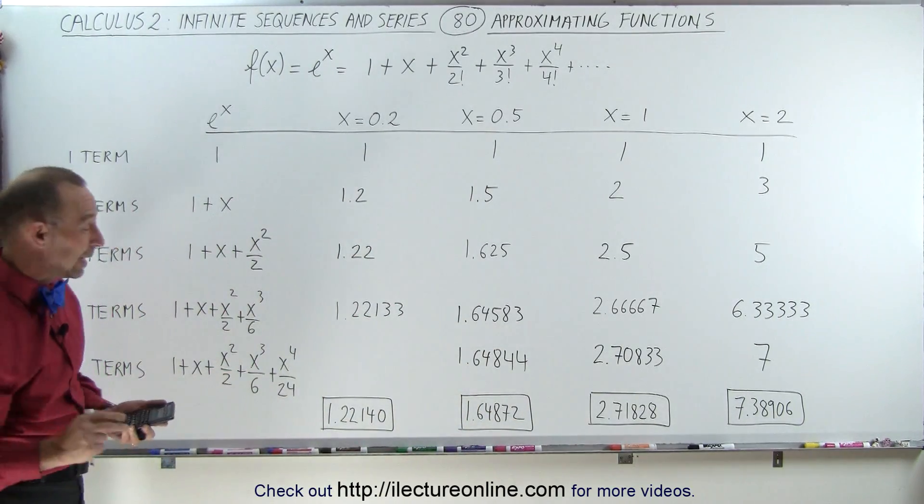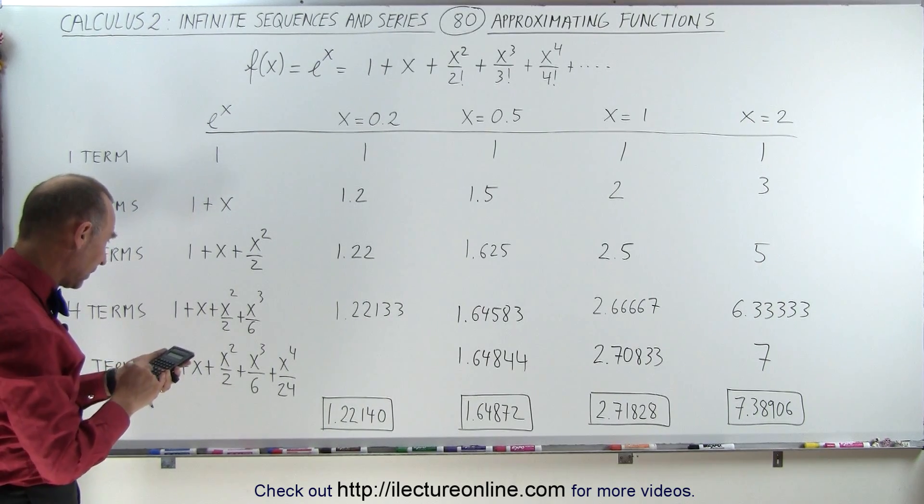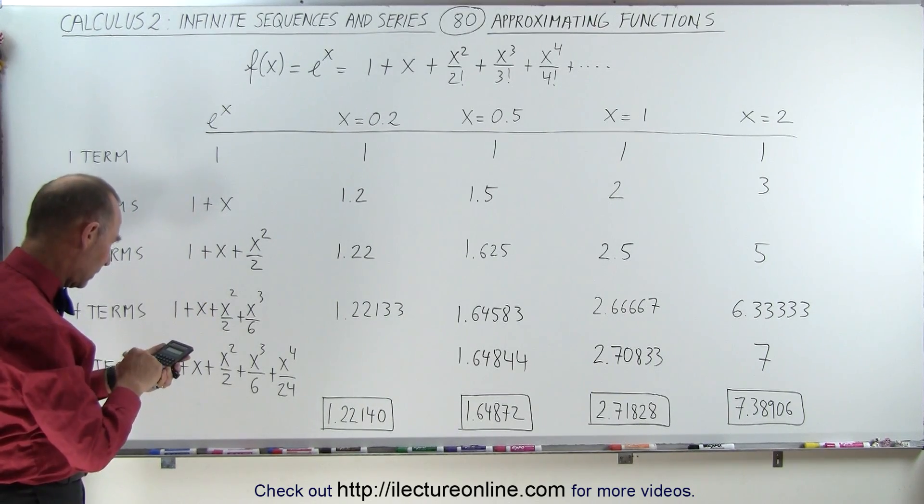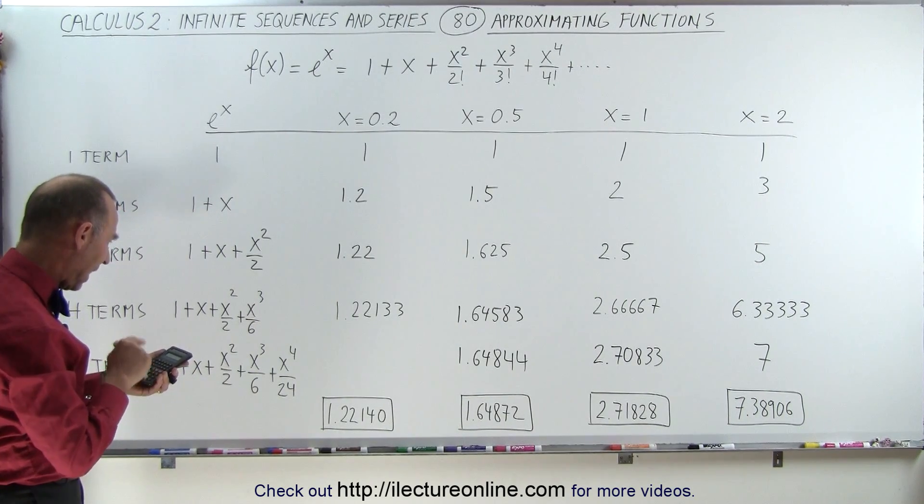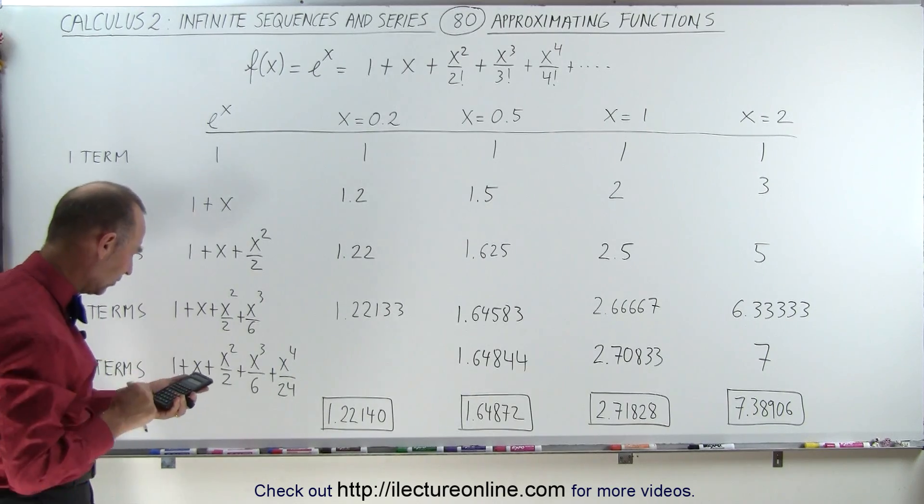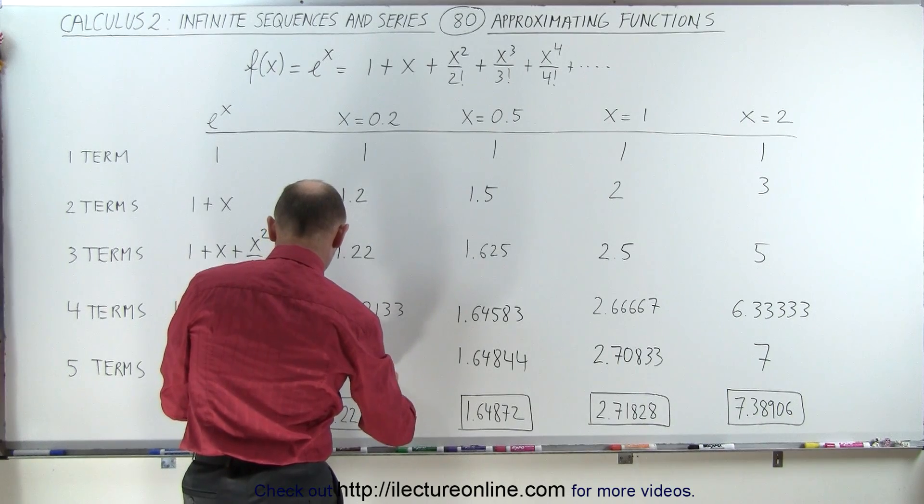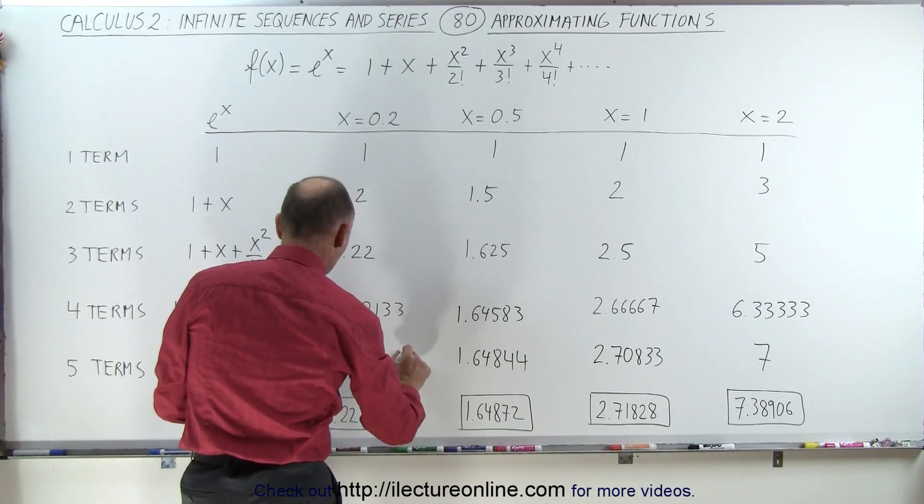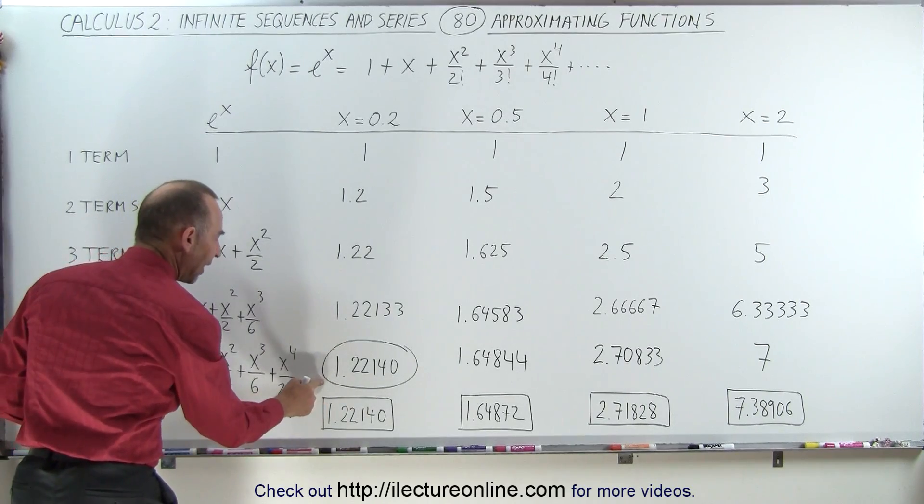And over here, I think we're going to get really close to that one. So we have 0.2 to the fourth power, divided by 24, and add that to 1.22133. And notice we get 1.22140. So after five terms, we get the exact value, well, the exact value to five decimal places of e to the 0.2 power.